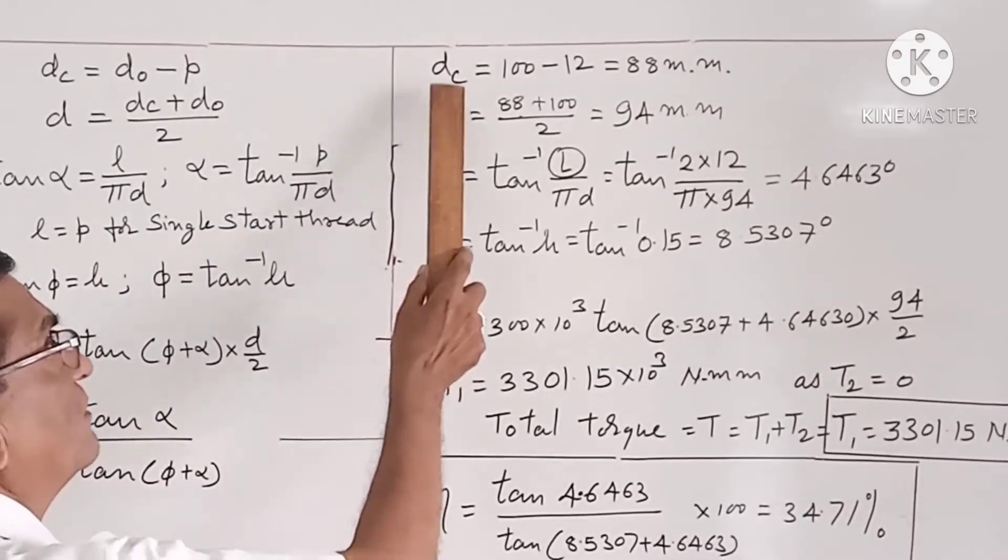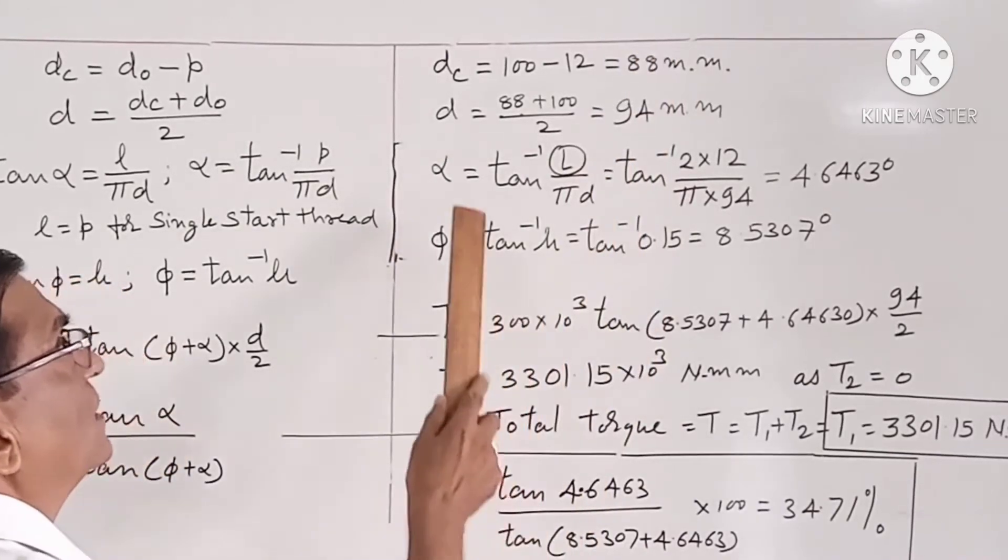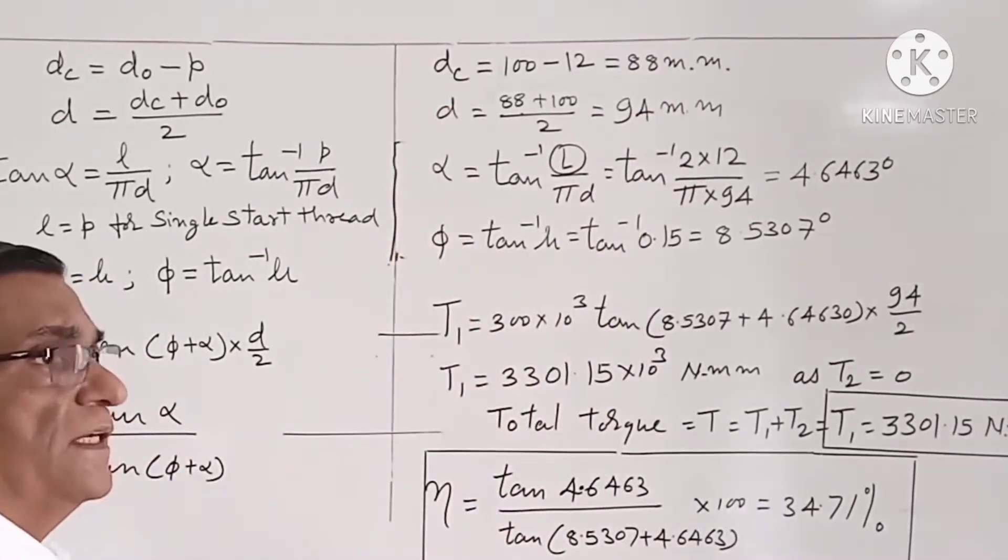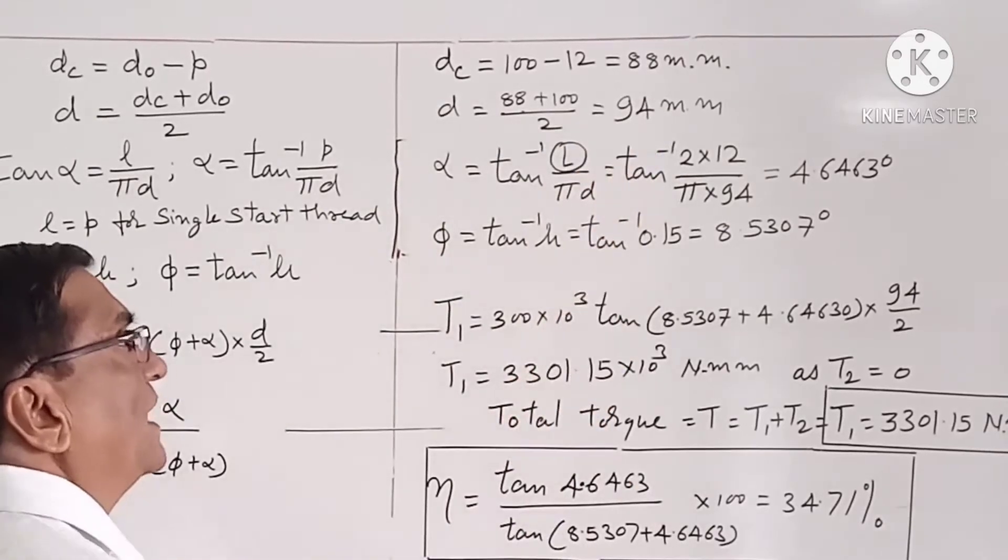Now, first we will calculate the core diameter, which comes out to be 88 mm. Then we calculate the mean effective diameter d, which comes out to be 94 mm.